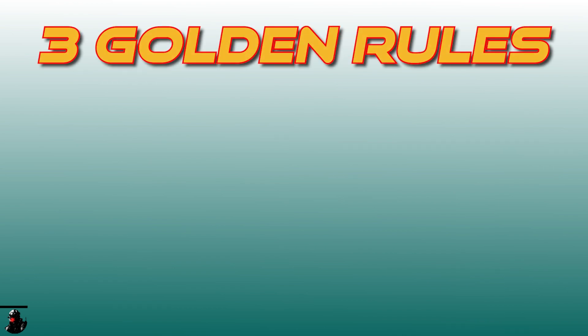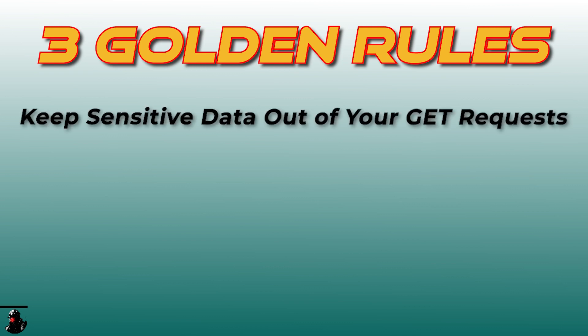As we wrap up our discussion on the GET method, let's highlight three golden rules every web developer should follow to ensure security and efficiency. First: keep sensitive data out of your GET requests. Anything sent through a GET request can easily be seen in the URL. This visibility means sensitive information could be exposed in browser history, server logs, or even seen by someone looking over your shoulder. Never use GET for transmitting private information like passwords, personal identifiers, or payment details.